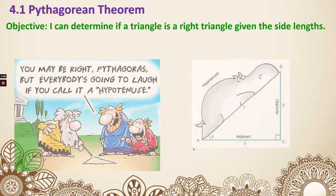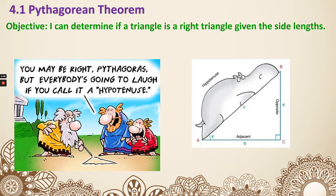Here are some memes that might help you remember the Pythagorean theorem. First one: you may be right Pythagoras, but everybody is going to laugh if you call it hypotenuse. Well, he eventually still called it hypotenuse. That word is actually similar to hypotenuse — you can see it's actually lying on a slope. And then we have the other two sides.